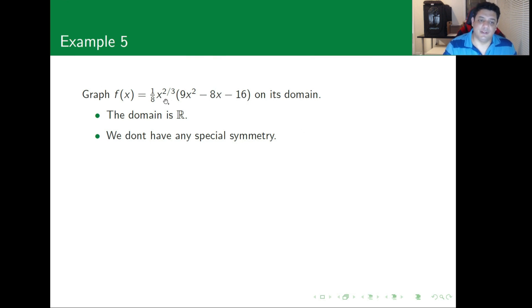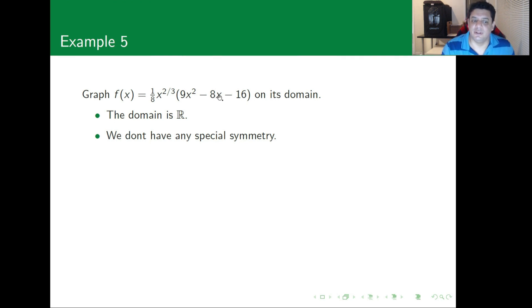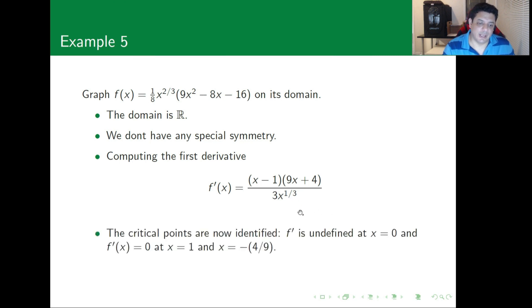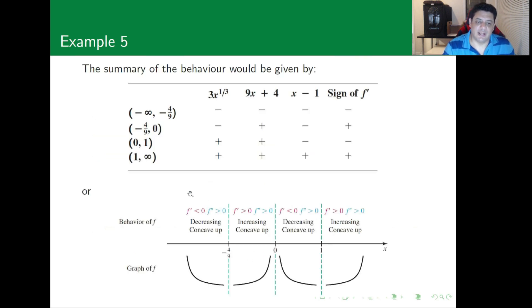There is no special symmetry here since we cannot identify the function as odd or even. Computing the first derivative gives (x - 1)(9x + 4) divided by 3x^(1/3). This produces two types of critical points: where f' is undefined at x = 0, and where f' = 0 at x = 1 and x = -4/9.